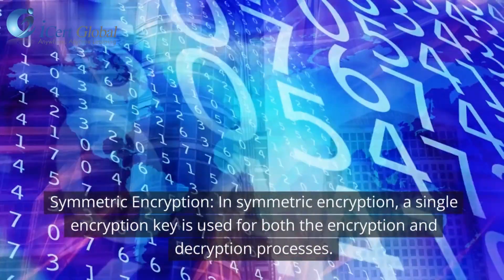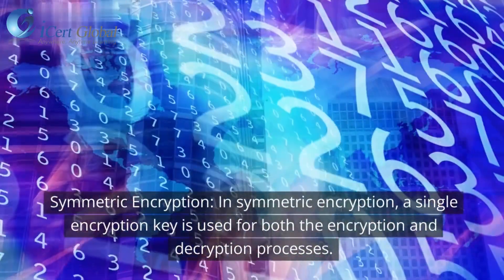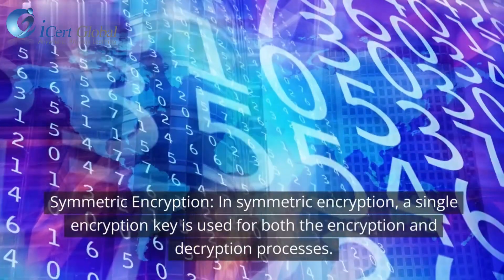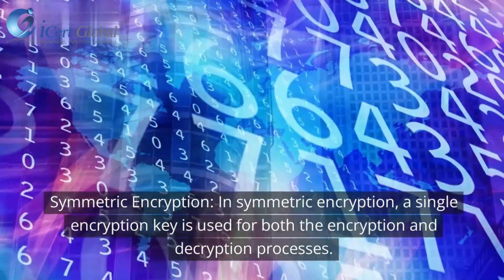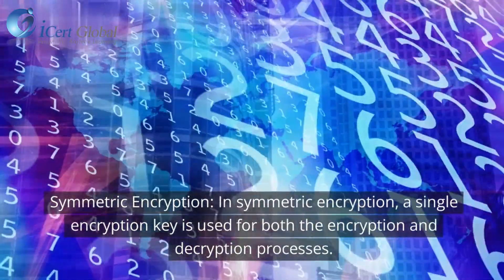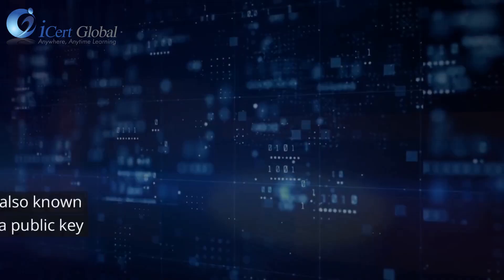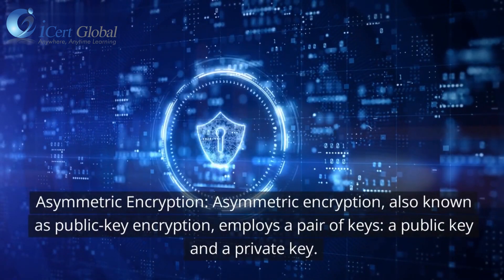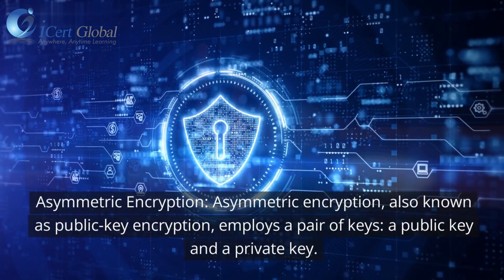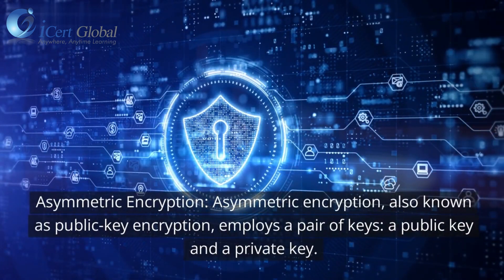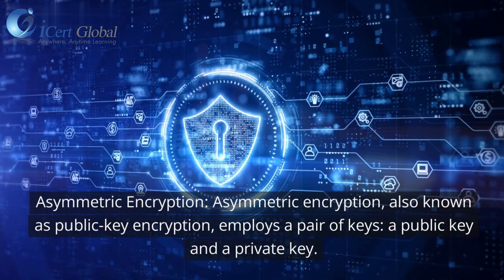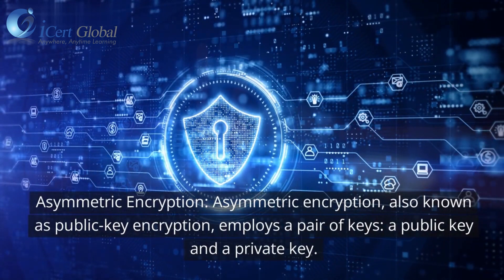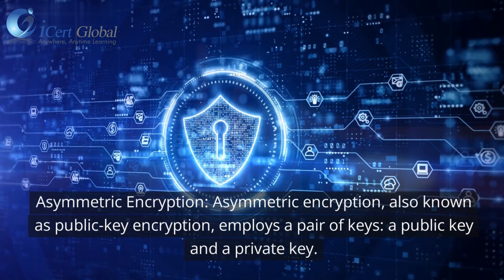What are the two types of data encryption techniques? Symmetric encryption: In symmetric encryption, a single encryption key is used for both the encryption and decryption processes. Asymmetric encryption: Asymmetric encryption, also known as public key encryption, employs a pair of keys — a public key and a private key.